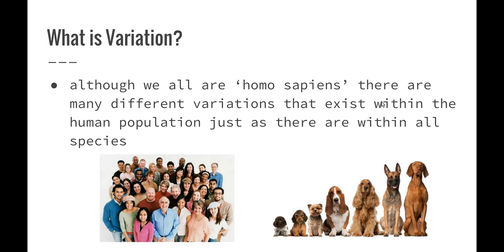So what is variation? Although we are all Homo sapiens, there are many different variations that exist within the human population, just as there are within all different species. If you look around your family, you all come from the same genetic gene pool, but there are slight variations between each of you — things like hair colour, eye colour, your predisposition, height and weight, whether you write with your left or right hand, and your ability to see long and short distances. All these things are variations.